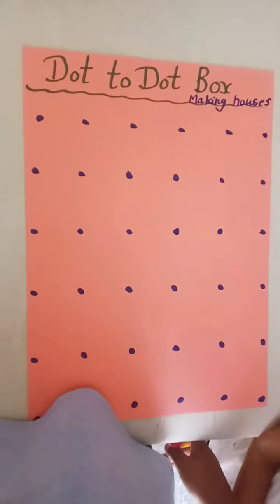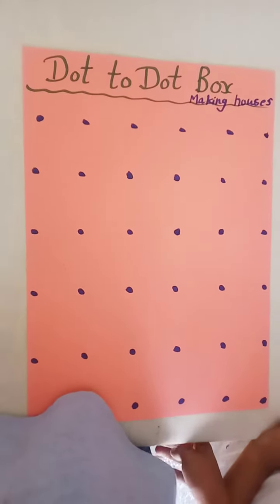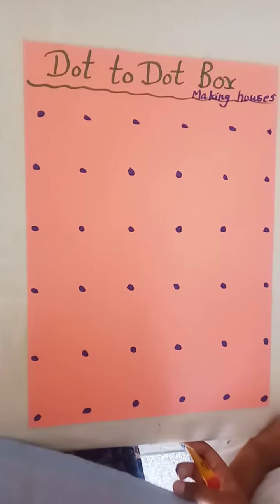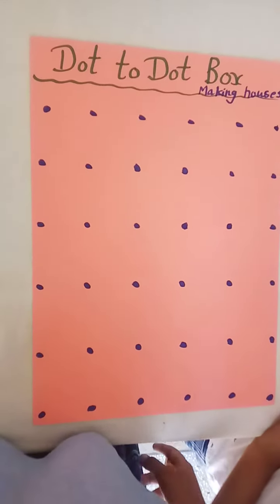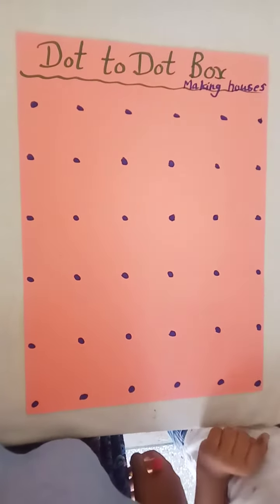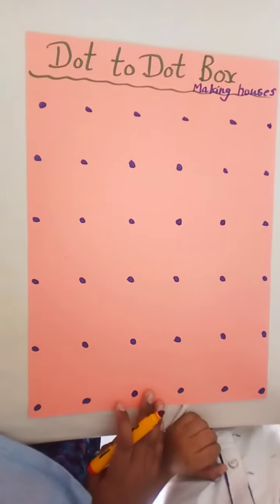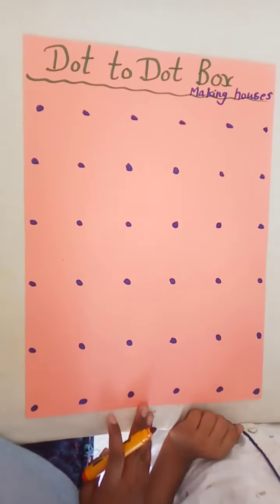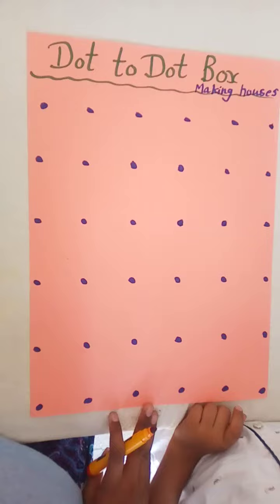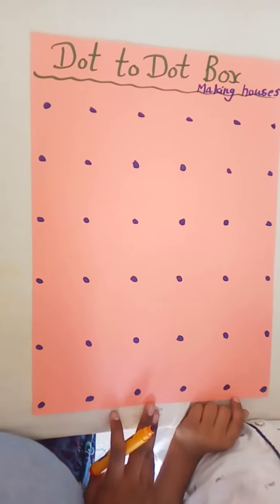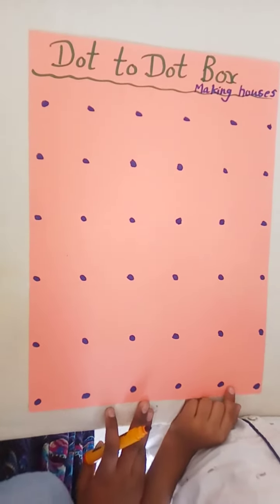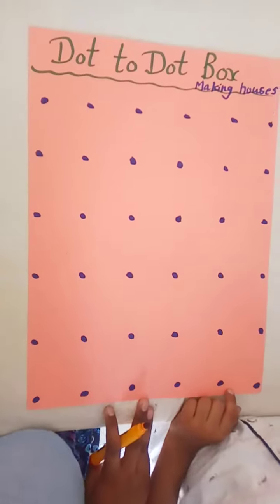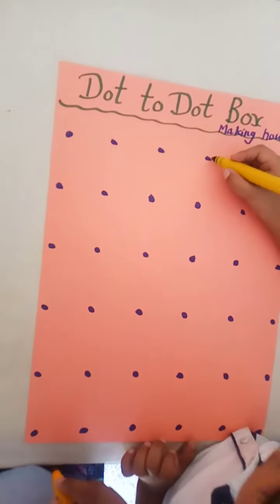Today we will play an interesting game: Dot to Dot Box Making Houses. It's a very interesting game where two people play by matching dots, connecting one dot to another. When the house is ready, write the first letter of your name. Let us start joining the dots.